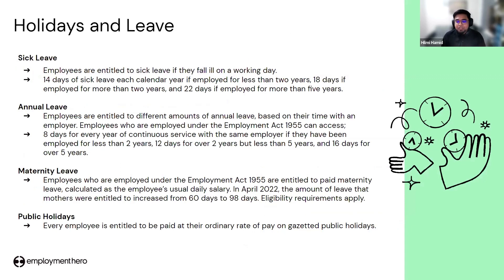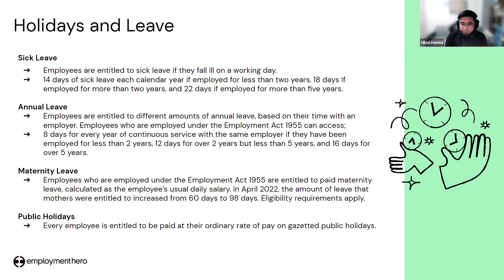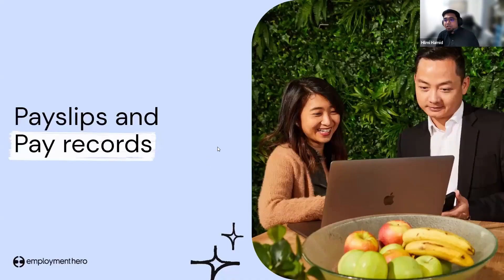Next, let's look at holidays and leave. Among the leave types gazetted under the EA, we have sick leave, annual leave, and paternity leave. The EA also mentions tiered leave, meaning entitlement is based on years of service — employees who have worked more than two years are entitled to more sick leave or annual leave. Public holidays are also mentioned in the EA, with 11 days of gazetted public holidays that employers must give to employees.